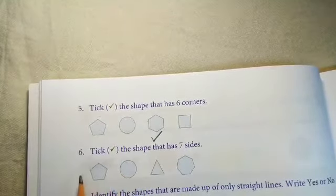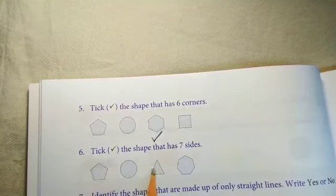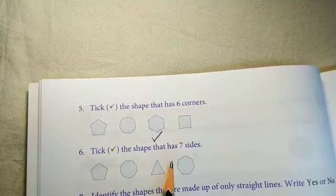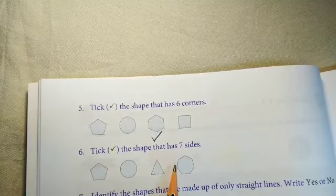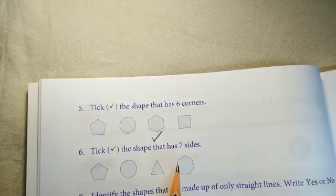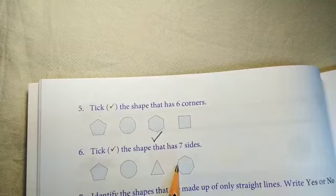Now, question number 6. This is your homework in that you have to tick on the shape which has seven sides. Is it clear students?